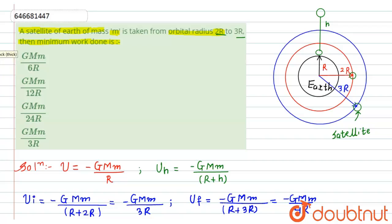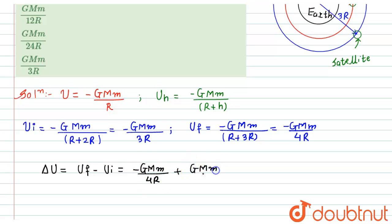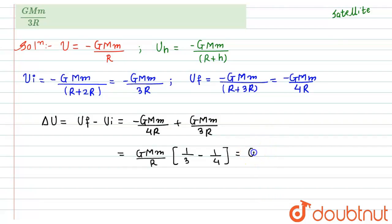The minimum work done equals the change in potential energy, ΔU = U_f − U_i = −GMm/4R − (−GMm/3R) = GMm/R × (1/3 − 1/4). Taking the common denominator, this gives GMm/R × (4 − 3)/12 = GMm/12R.